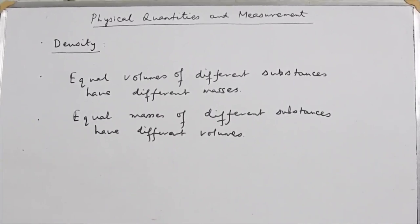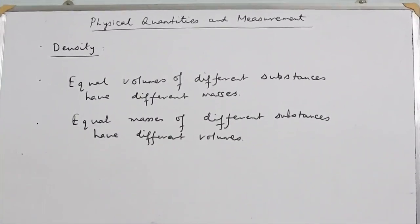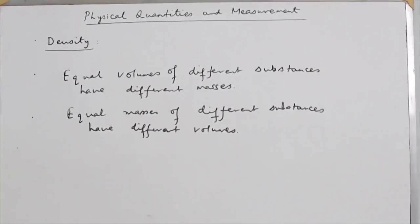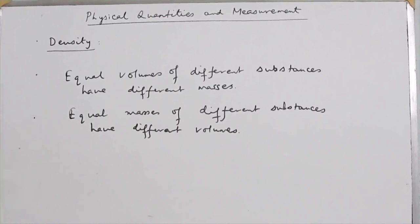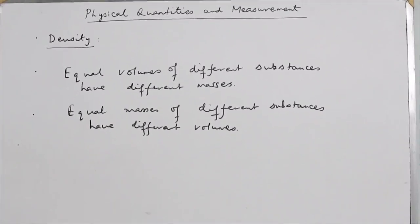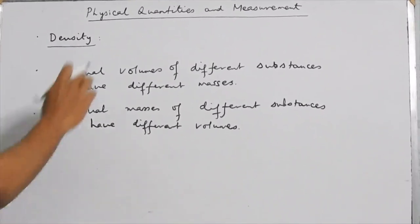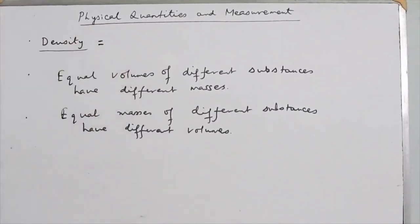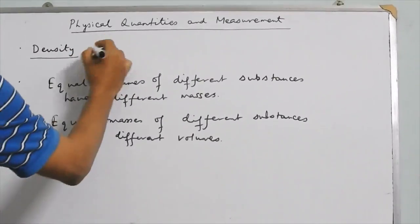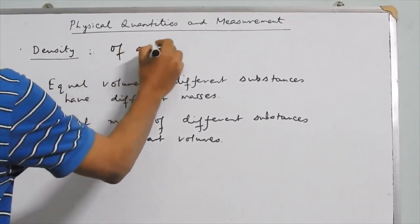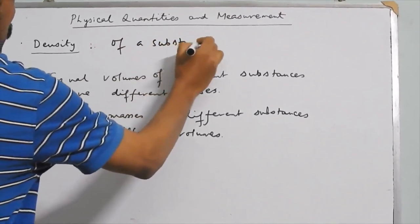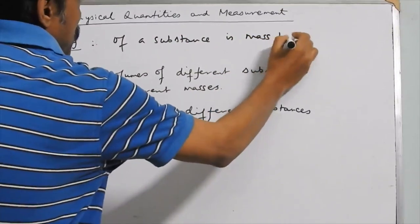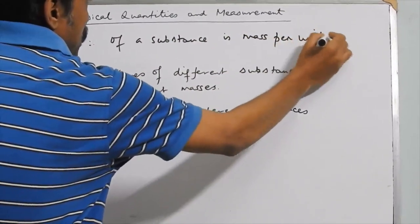In order to explain the fact that equal volumes of different substances have different masses, or equal masses of different substances have different volumes, we use a physical quantity called density. The density of any substance is simply the mass per unit volume of the given substance.